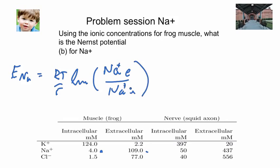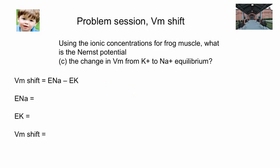If we now ask part C of the question — what is the change — that's easily obtained. That's simply the values we obtained in the previous two parts: ENa minus EK. You'll fill in those values and determine the shift.